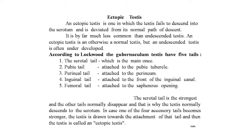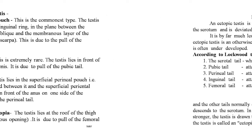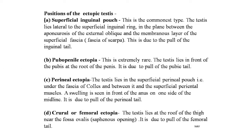According to Lockwood, the gubernaculum testis has five tails: the scrotal tail (the main one), the pubic tail attached to the pubic tubercle, the perineal tail attached to the perineum, the inguinal tail attached to the front of the inguinal canal, and the femoral tail attached to the saphenous opening. The scrotal tail is the strongest; the other tails normally disappear, so the testis normally descends to the scrotum. If one of the four accessory tails becomes stronger, the testis is drawn toward that tail's attachment — resulting in ectopic testis.